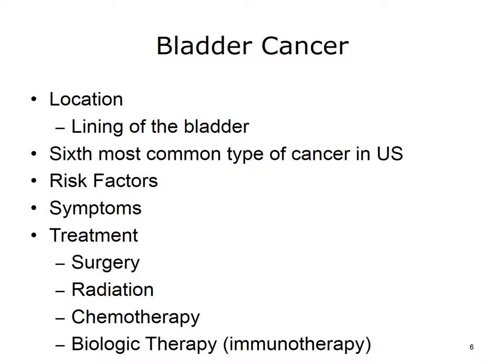Bladder cancer occurs in the lining of the bladder. It is the sixth most common type of cancer in the U.S. There are several risk factors for developing bladder cancer. These include smoking, exposure to chemicals in the workplace, and a family history of bladder cancer. You are more likely to get bladder cancer if you are an older, white male. Symptoms of bladder cancer include low back pain, blood in your urine, painful urination, and needing to frequently empty your bladder, which is called urinary frequency.